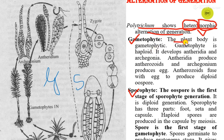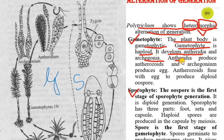The plant body is gametophytic. The gametophyte is a haploid — that means the gametophytic generation of Polytrichum is a haploid generation. This gametophytic phase will develop antheridia and archegonia. The antheridia will produce antherozoids and the archegonia will produce egg.